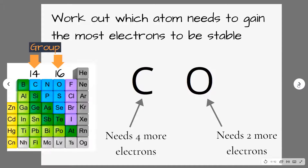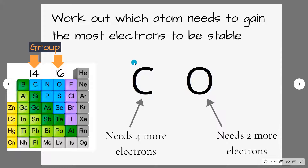The first step is to work out which atom will become your central atom — this is the one that needs to gain the most electrons before it has a full outer shell. If we look at carbon, it's in group 14 which means it has four electrons in its outer shell, so it needs another four to be stable. Whereas oxygen is in group 16, so it has six electrons in its outer shell and it only needs two more to become stable.